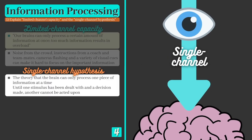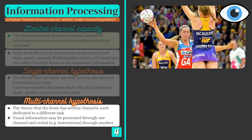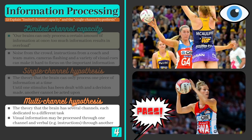The single channel hypothesis suggests that we're only capable of processing one piece of information at once, and until one has been dealt with, another cannot be acted upon. The multi-channel hypothesis, by comparison, suggests that the brain has multiple channels, each of which is dedicated to a different task. This would mean that visual information from the actions of an opponent and auditory information from a teammate's instructions can be processed concurrently, allowing athletes to make decisions that take more information into account.